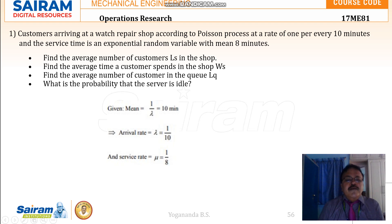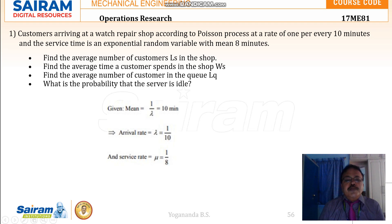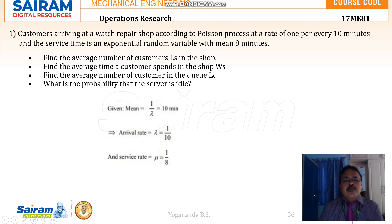It is asked to find the average number of customers — that is the length of the queue LQ, the length of the system LS in the shop, and the average time a customer spends in the shop, which is the waiting time WS. LS in the shop means the number of customers both in the queue as well as at the service counter. LQ means the customers who are waiting only in the queue — their average number at any point of time. Also, what is the probability that the server is kept idle?